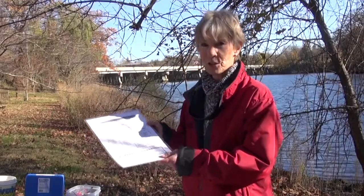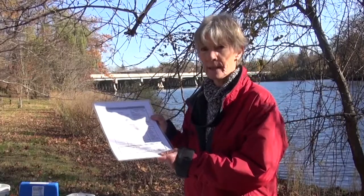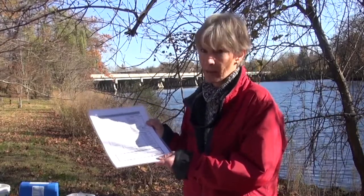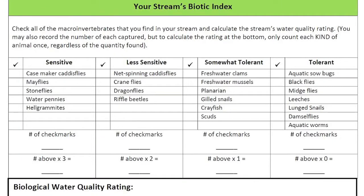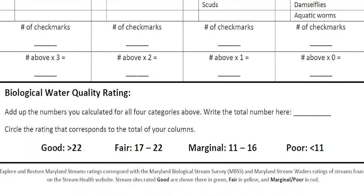When we do our biological assessments, we usually use a rating sheet developed by Maryland Biological Stream Survey and Maryland Stream Waders. We rate our stream not necessarily by the number of macroinvertebrates found, but by the diversity. We have sensitive organisms, less sensitive, somewhat tolerant, and tolerant. We count the number of different organisms found, multiply by either three, two, one, or zero, and come to a number that tells us if our stream is good, fair, marginal, or poor.